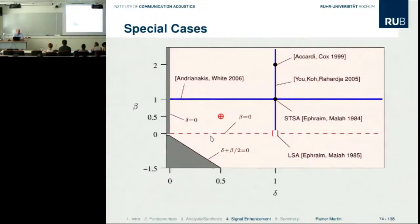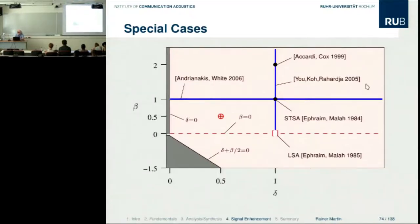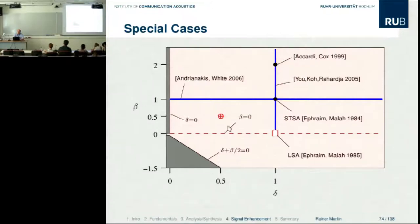This general gain rule summarizes many older special cases: the Ephraim-Malah STSA estimator corresponds to δ=1, β=1 (Gaussian, no compression); the log spectral amplitude estimator is the limiting case. You can move around in this parameter space. A good operating point found in practice is δ=0.5 (super-Gaussian) and β=0.5 (square-root compression), providing a good trade-off between noise reduction and target signal distortion.